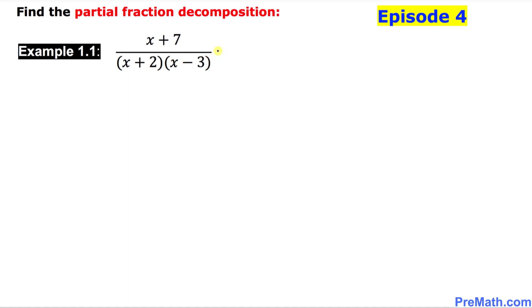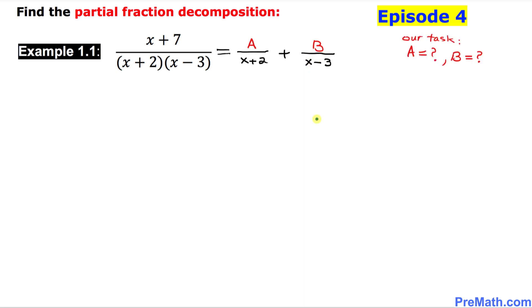We know in the denominator we have linear factors. Since there are two fractions, I'm going to put down x plus two for the first one, and x minus three for the second one. On top, it's going to be constant A for the first fraction and constant B for the second. Our task is to find the value of A and B.